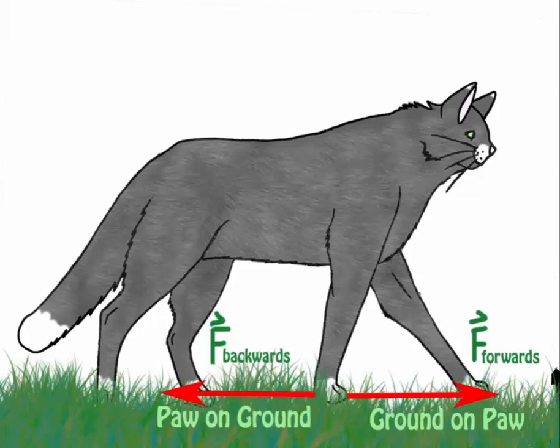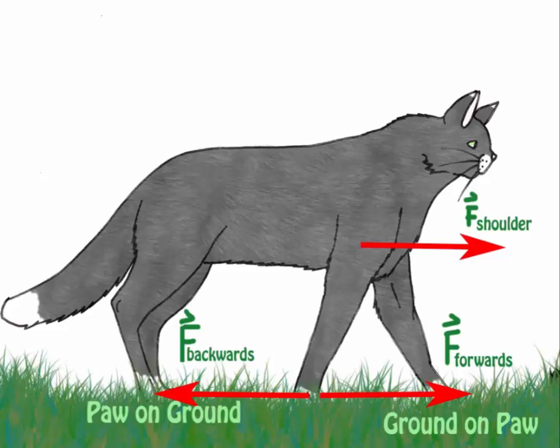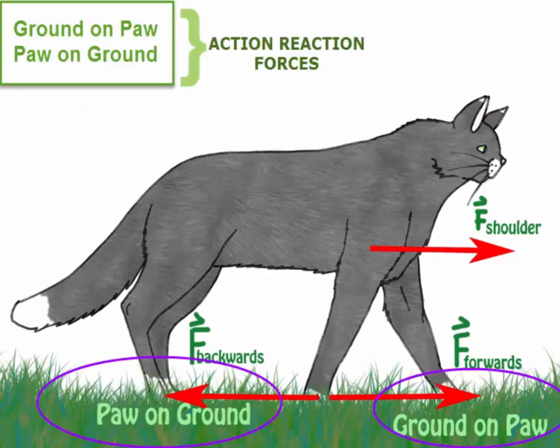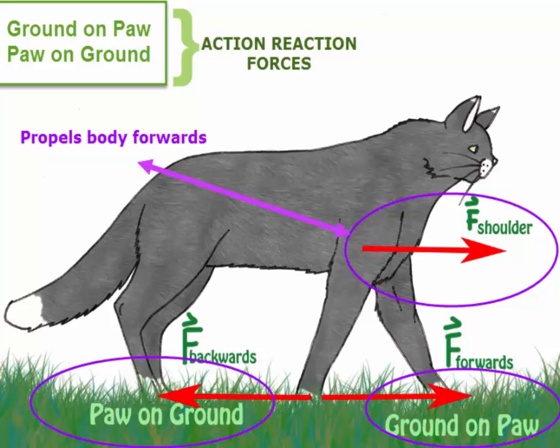Since static friction keeps objects in place, we have to wonder what is actually propelling the cat forward. It turns out it's actually the force in the shoulder muscles that propels the cat forward. This is because the force ground on paw is equal in magnitude to the propelling force of the cat's shoulder muscles. The shoulder muscles exert a force that rotates the leg backwards and in turn allows the torso to move forward over the static paw. So it's actually the internal muscle forces that propel the cat forward. This is exactly the same way humans walk, except that the propelling force would be from the hips and thigh muscles.